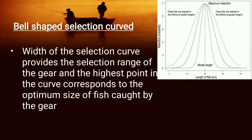On the left-hand side, fewer fish are caught in the drift net at smaller lengths, and on the right-hand side fewer fish are caught in the drift net at greater length. The bell-shaped selection curve is mainly for fish caught by fixed gear. The width of the selection curve provides the selection range of the gear, and the highest point in the curve corresponds to the optimum size of fish caught by the gear.